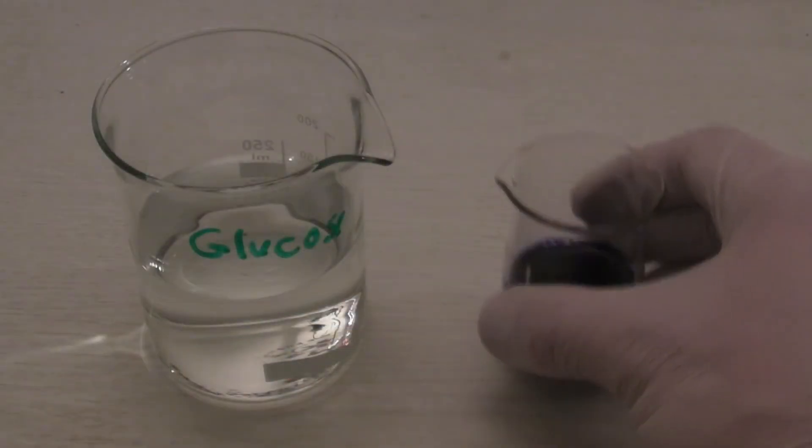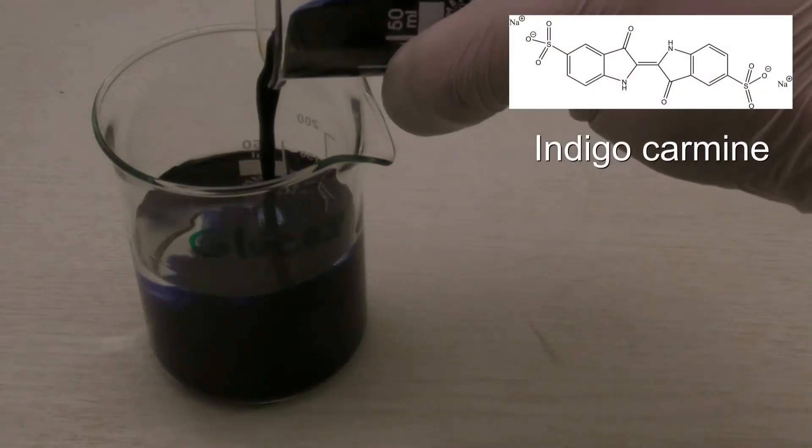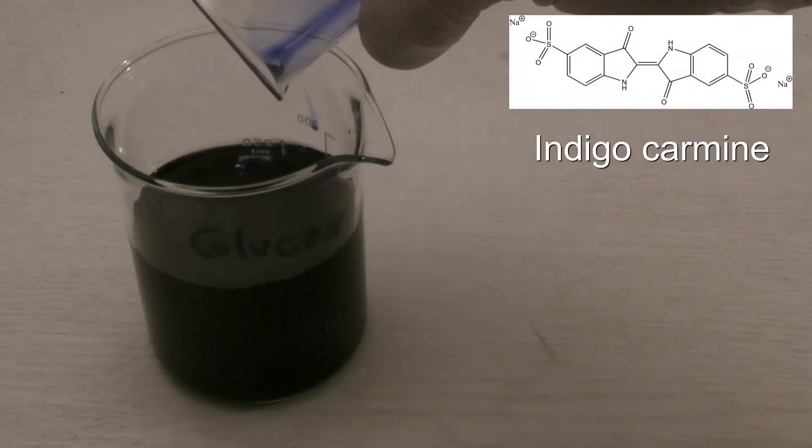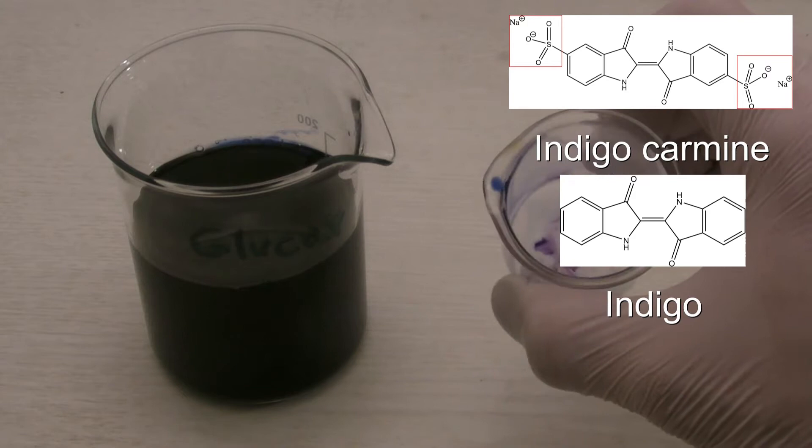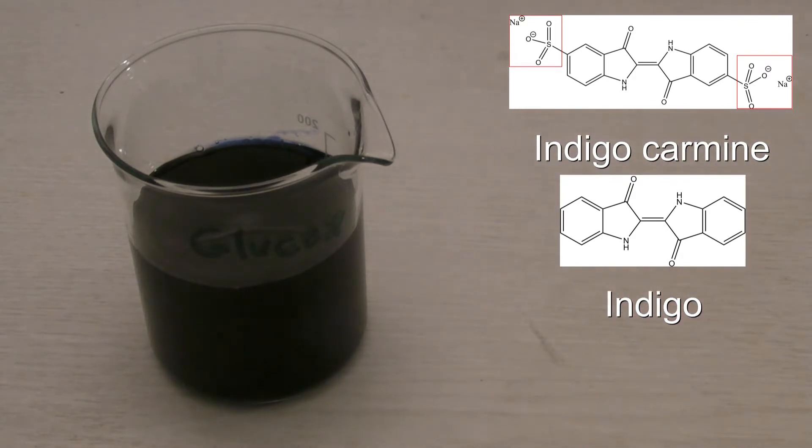A related soluble substance is indigo carmine, which has a lot of applications. It can be seen that both compounds only differ due to the sulfonic acid functional groups. This is why it can be assumed that indigo carmine can be prepared by the sulfonation of indigo.